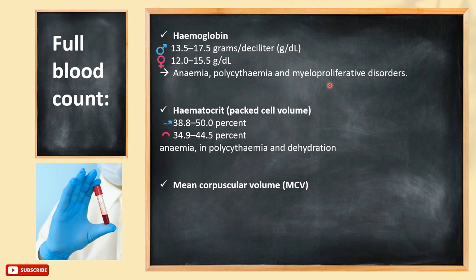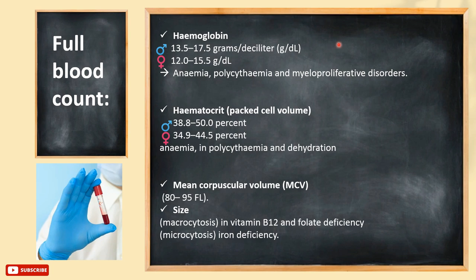Mean corpuscular volume (MCV): here is the normal range in femtoliters. It is the average volume of the red cells in a specimen. MCV is elevated or decreased according to the average red blood cell size. A low MCV indicates microcytic, meaning a small average RBC size, which can occur in anemia or iron deficiency. A normal MCV indicates normocytic, a normal average RBC size. A high MCV indicates macrocytic, a large average RBC size, which can happen in cases of vitamin B12 and folate deficiency.